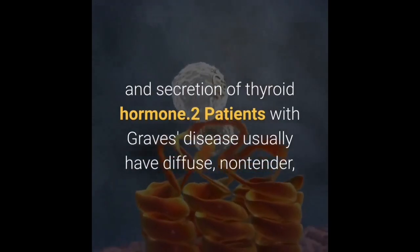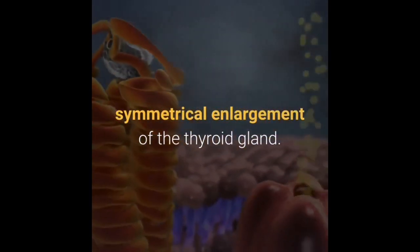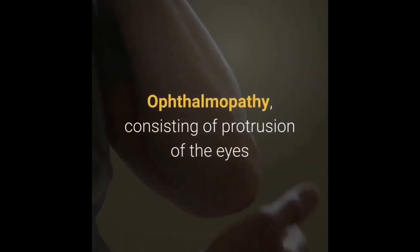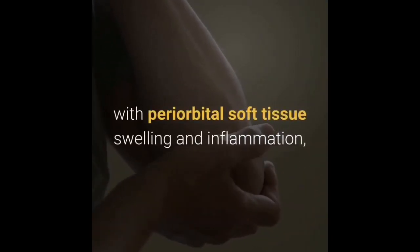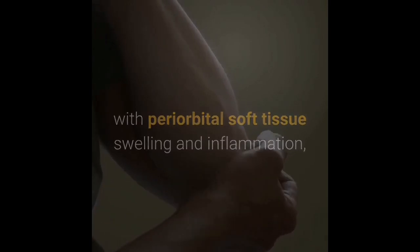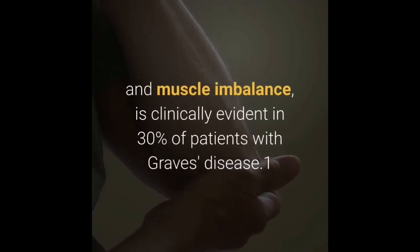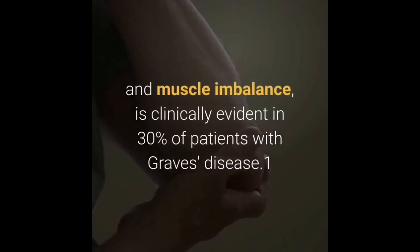Patients with Graves' disease usually have diffuse, non-tender, symmetrical enlargement of the thyroid gland. Ophthalmopathy, consisting of protrusion of the eyes with periorbital soft tissue swelling and inflammation, and inflammatory changes in the extraocular muscles resulting in diplopia and muscle imbalance, is clinically evident in 30% of patients with Graves' disease.